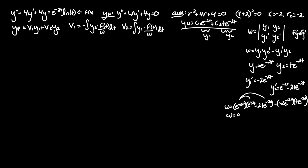Distributing, we get e^(-4t) - 2te^(-4t) + 2te^(-4t). The two middle terms cancel, leaving the Wronskian W = e^(-4t).